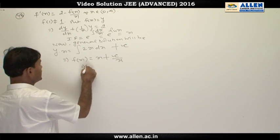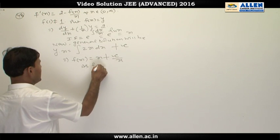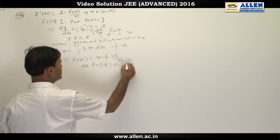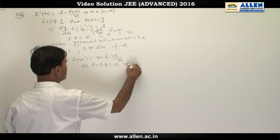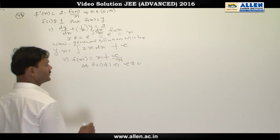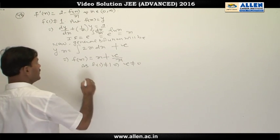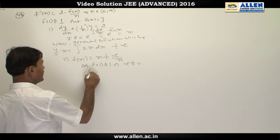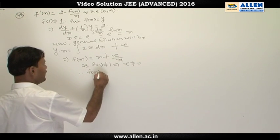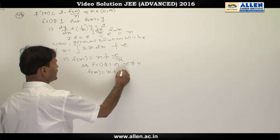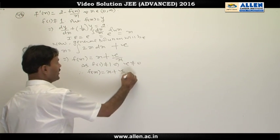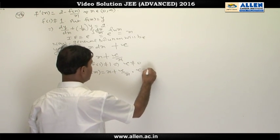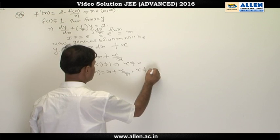As we are given f(1) ≠ 1, this implies c will not be 0. Therefore we can write f(x) = x + c/x where c ≠ 0.